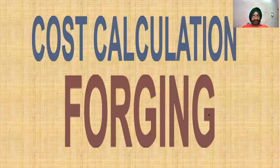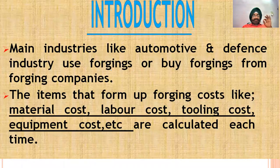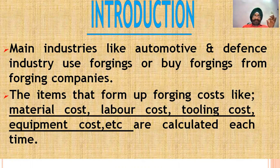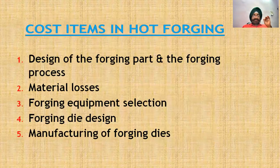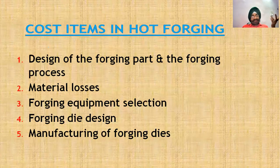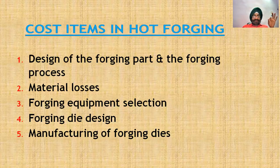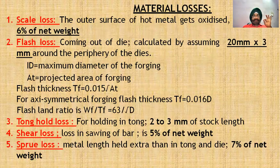Now we move to cost calculation. Automotive and defense industries heavily use forged parts. The cost estimation for forging includes material cost, labor cost, tooling cost, and direct and indirect costs. Material losses need to be accounted for. Forging equipment cost, forging die design and manufacturing are the main components. The material losses must be minimized as much as possible.